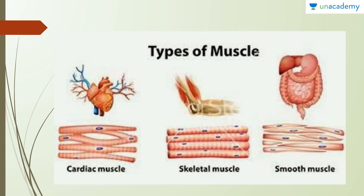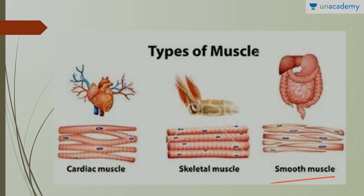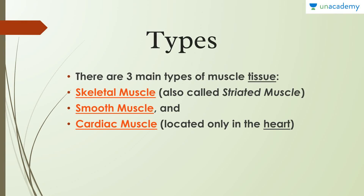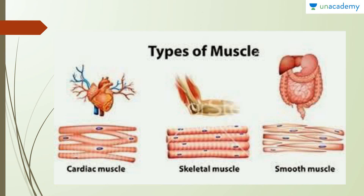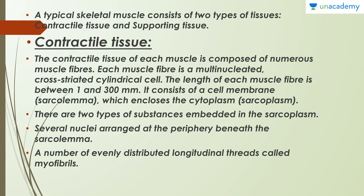Diagrammatically, we have a picture of cardiac muscle, then skeletal muscle, and then smooth muscle. Skeletal muscles are also termed striated muscle because they appear very striped in appearance, whereas smooth muscle is also termed unstriated muscle because it's not striped. A smooth muscle is also spindle-shaped, as you can see in the diagram.